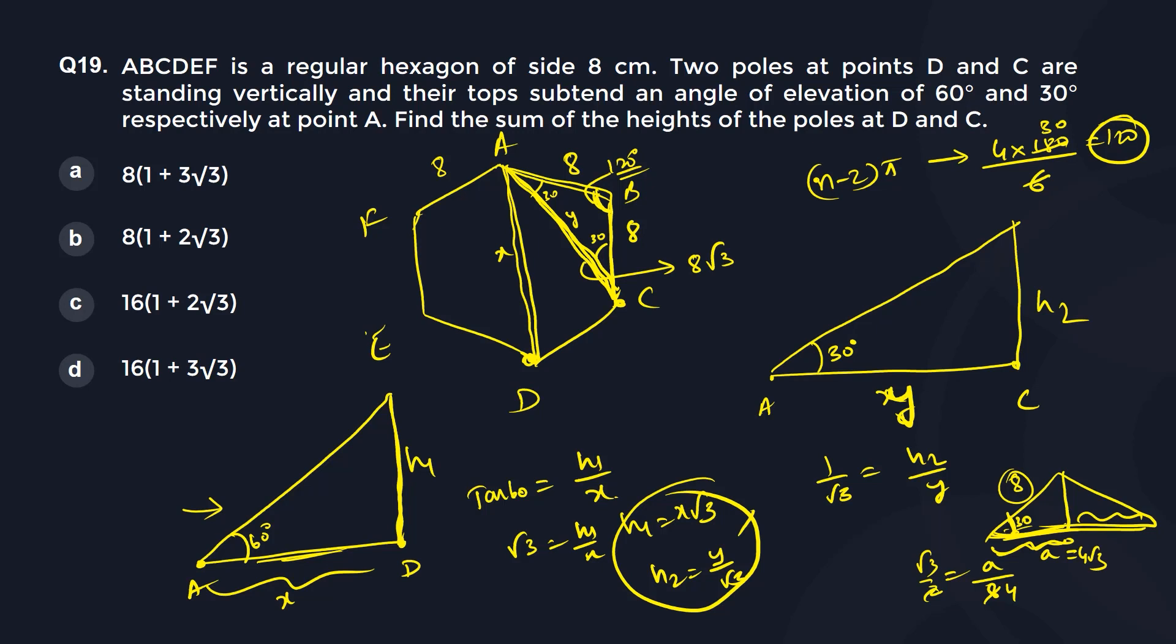Now we want again this value x. So your y is 8 root 3. So what is your h2? So your h2 is y by root 3. So your h2 is 8 root 3 by root 3. So this gets cancelled which is 8. Great. So this is basically 8.